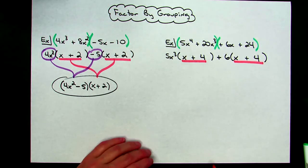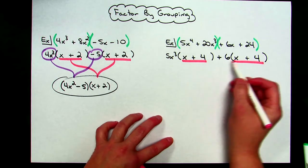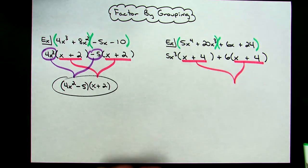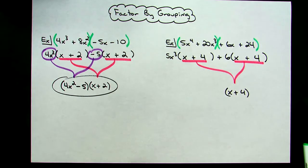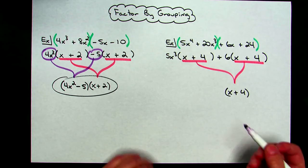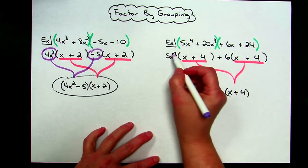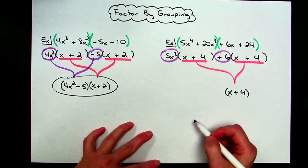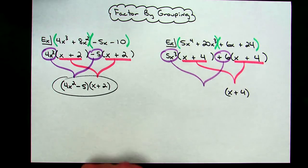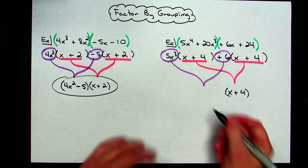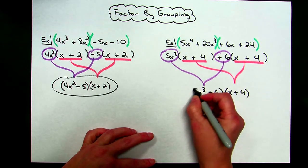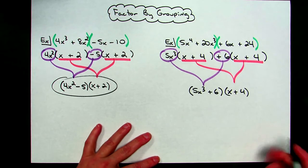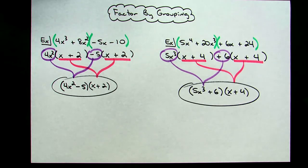So when I factor those out one more time — because I've got two terms — I'm going to factor those out and only write them once. So I'll have an x plus 4 in the set of parentheses. To form my other binomial of what's left over, when I factor that out I will have a 5x to the third and a plus 6 — those two go together to create the first binomial: 5x to the third plus 6. Two sets of binomials being multiplied together is what your final answer is going to look like.